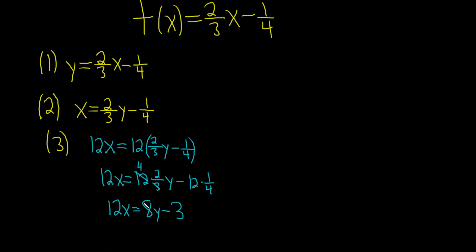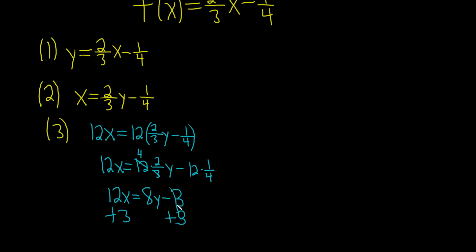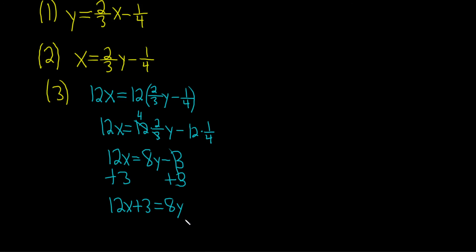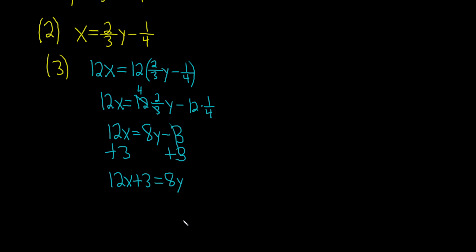So we're looking for y, and it's right here. We just have to get rid of the 3 by adding it. So plus 3 plus 3. That gives us 12x plus 3 equals 8y. We're almost there. y is being multiplied by 8, so in order to solve for y, we'll divide by 8.